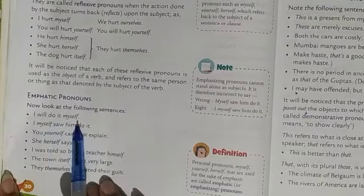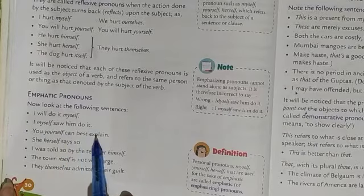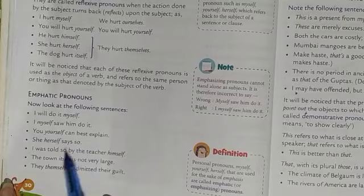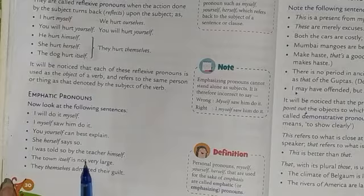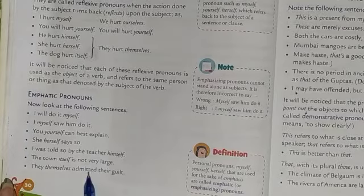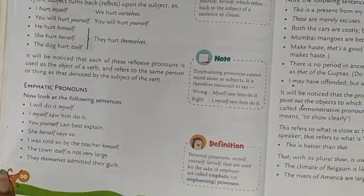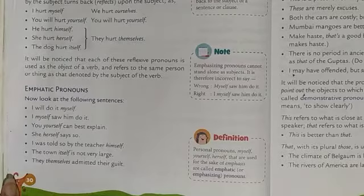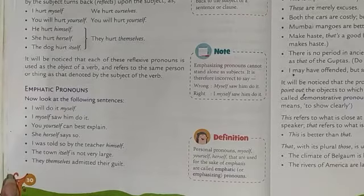Examples of emphatic pronoun: 'I will do it myself.' 'I myself saw him do it.' 'You yourself can best explain.' 'She herself says so.' 'I was told so by the teacher herself.' 'The town itself is not very large.' 'They themselves admitted their guilt.' It is used for the sake of emphasizing — to focus or give pressure on something. That is why it is called emphatic pronoun or emphasizing pronoun.